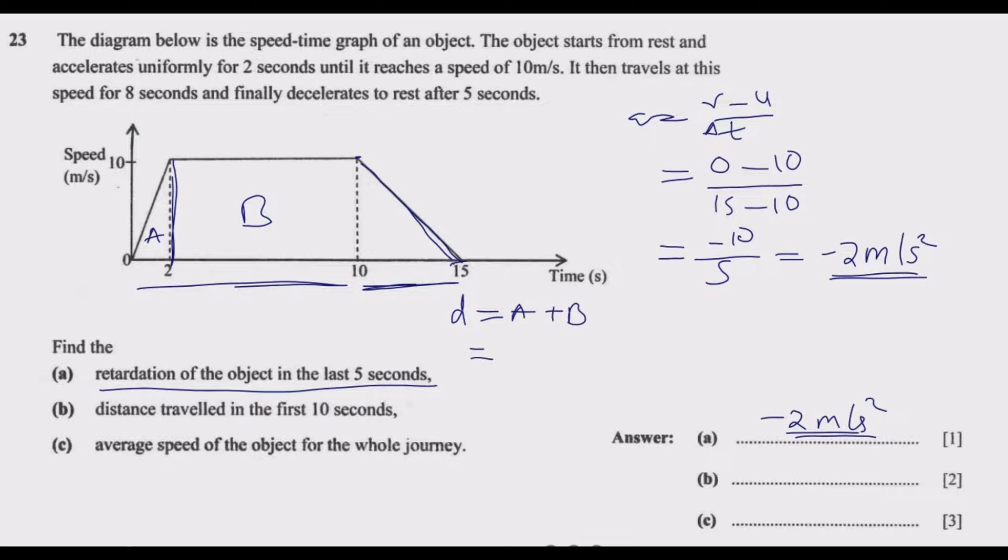Area under A is the triangle: half multiplied by 2 multiplied by the height which is 10. Plus B, in this case 10 minus 2 multiplied by the height which is 10 minus 0, which is 10. We end up with 10 plus 80.